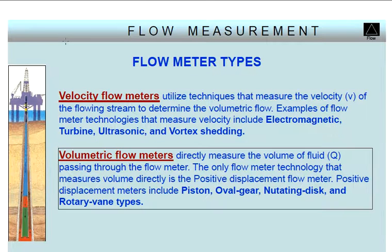Volumetric type flow meters directly measure the volume of fluid passing through the flow meter. The only flow meter technology that measures volume directly is the positive displacement flow meter. Positive displacement meters include piston, oval gear, nutating disc, and rotary vane types.